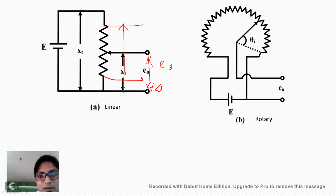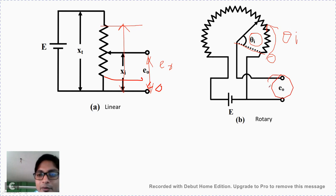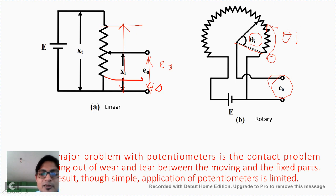Rotary displacement can also be measured with a rotary type potentiometer, which measures angular displacement. Here the input displacement Xᵢ is not linear but angular — it is theta (θᵢ). As angular displacement increases from zero, θᵢ increases and correspondingly E₀ increases, directly measuring angular displacement. However, the major problem with potentiometers is the contact problem resulting from wear and tear between moving and fixed parts, limiting their simple application.